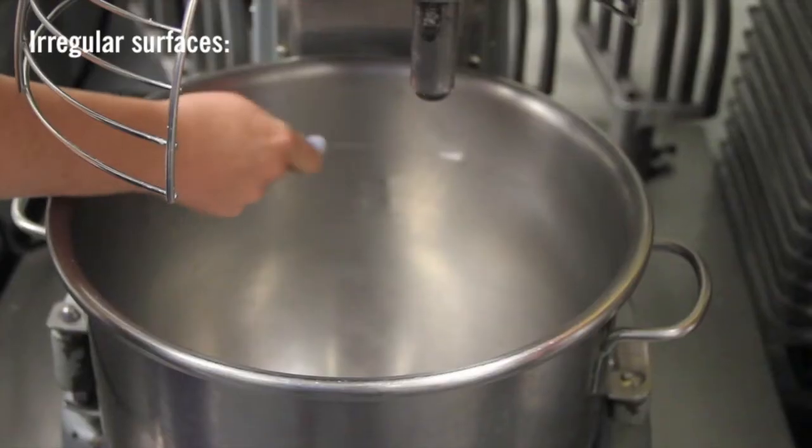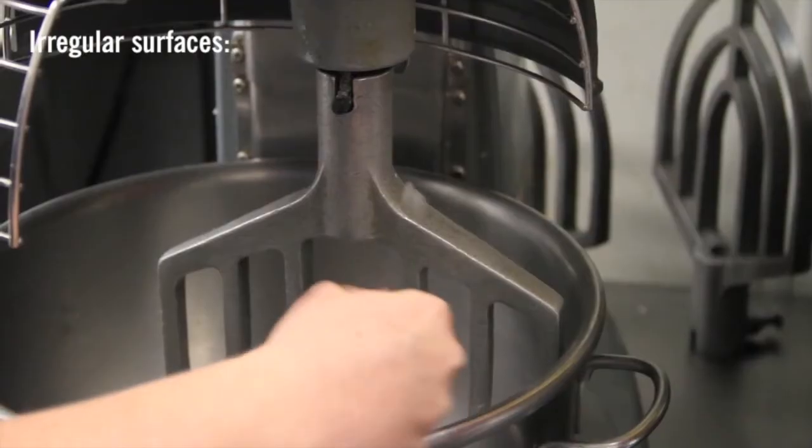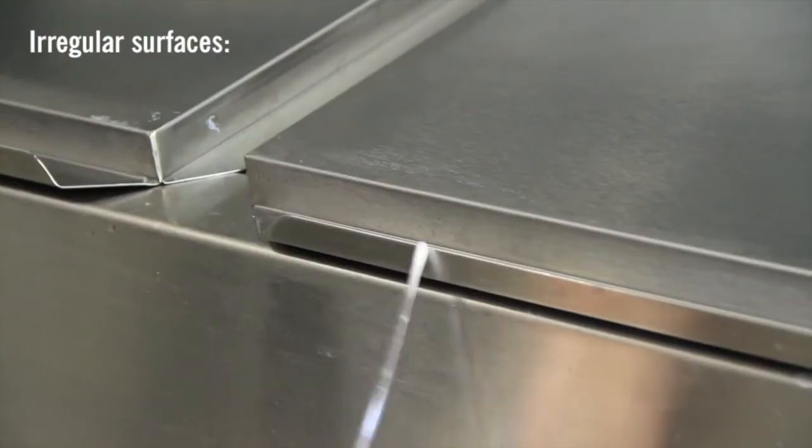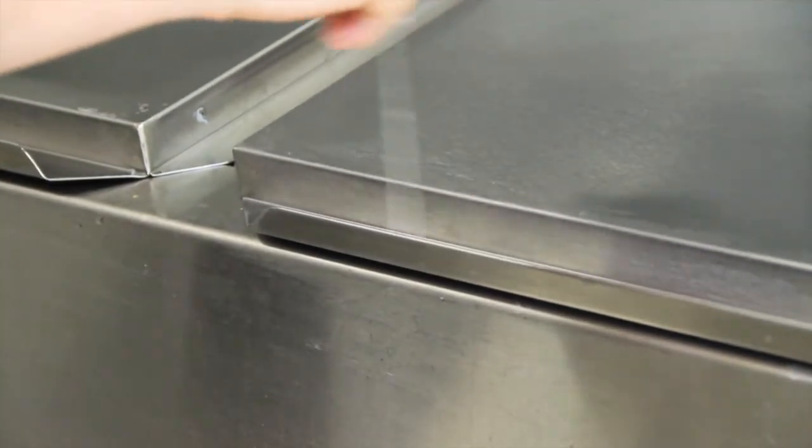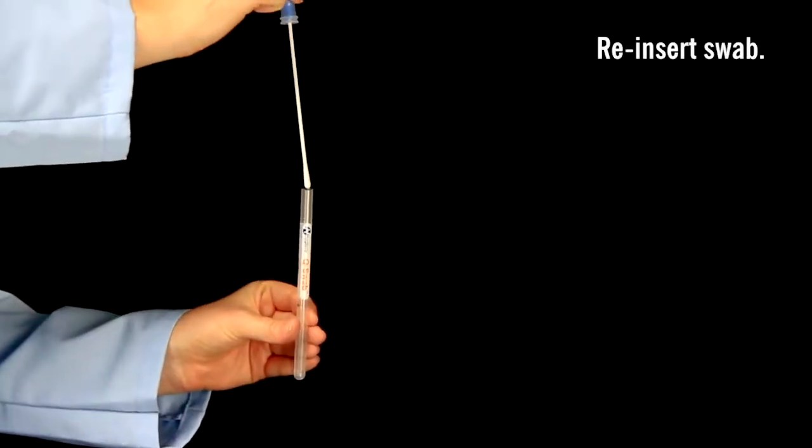When swabbing an irregular surface, ensure the swabbing technique remains consistent and swab a large enough area to collect a representative sample. Replace the swab in the tube.